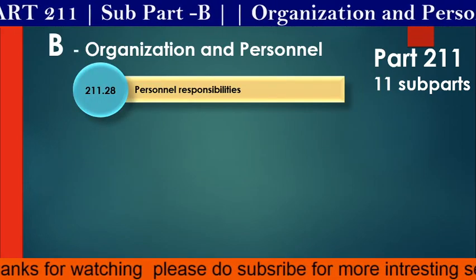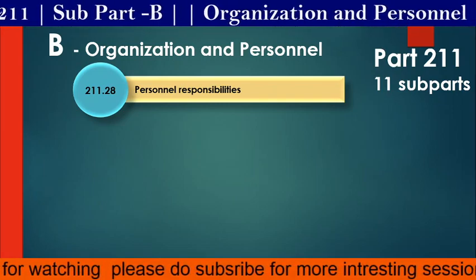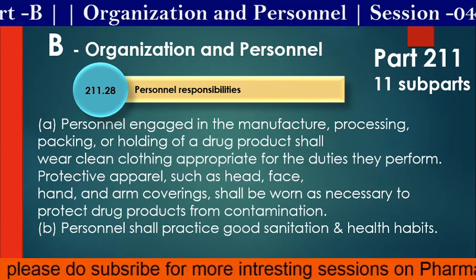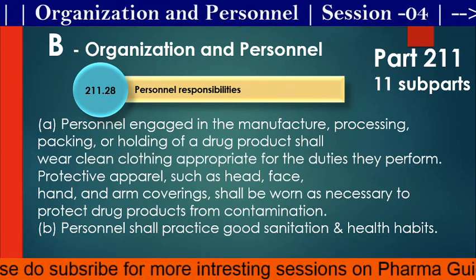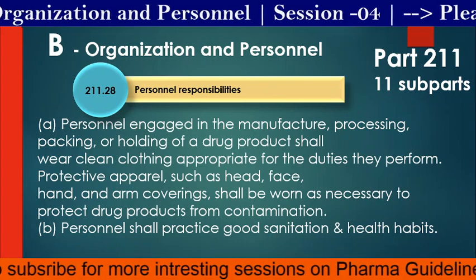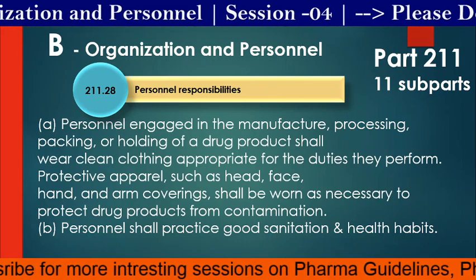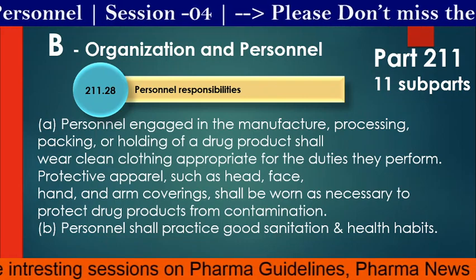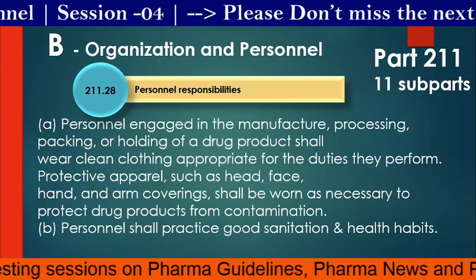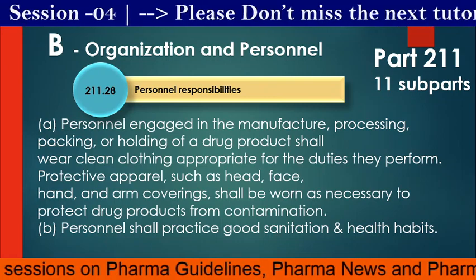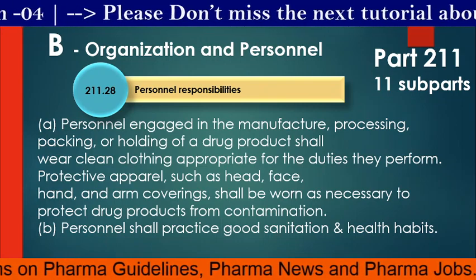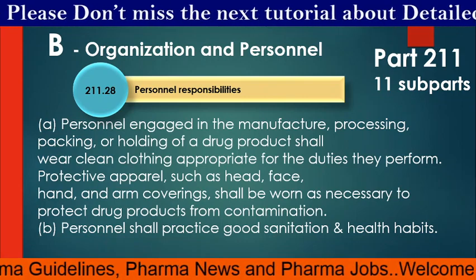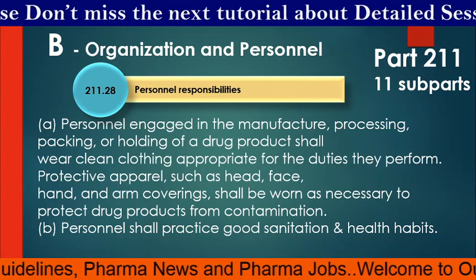Moving to 211.28 Personnel Responsibilities. Personnel engaged in the manufacture, processing, packing or holding of a drug product shall wear clean clothing appropriate for the duties they perform. Protective apparel such as headgear, face, hand and arm coverings shall be worn as necessary to protect drug products from contamination. Personnel shall practice good sanitation and health habits.